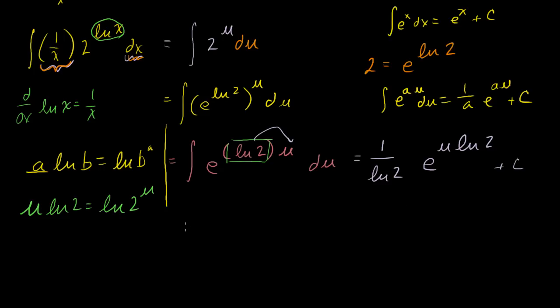So we can rewrite our antiderivative as being equal to 1 over the natural log of 2, times e to the, this can be rewritten as the natural log of 2 to the u. And of course, we still have our plus c there. Now, what is e raised to the natural log of 2 to the u? The natural log of 2 to the u is the power that you have to raise e to to get to 2 to the u, by definition. So if we raise e to that power, what are we going to get? We're going to get 2 to the u.